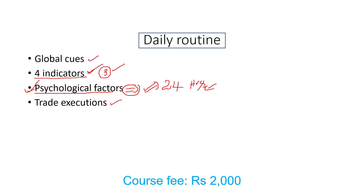The important factor is trade execution. We have a lot of things that are very simple, but we have a lot of liquidity problems. We have a maximum of 1,200 quantity, especially for options.